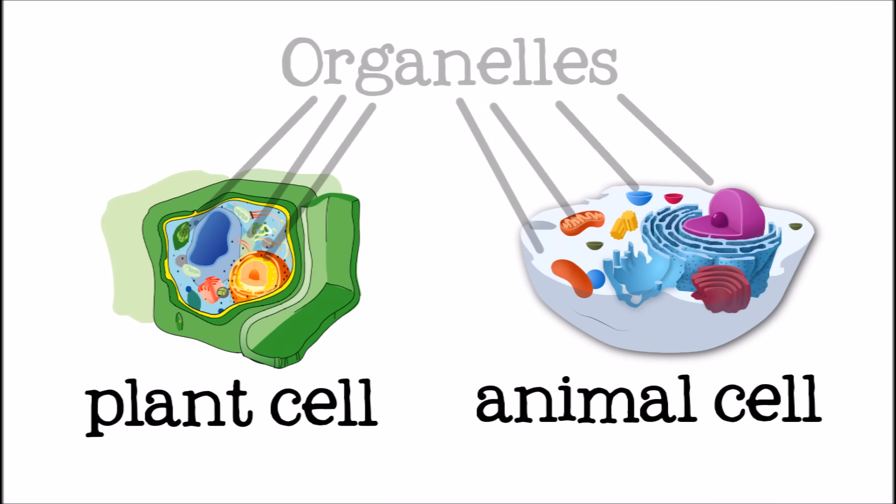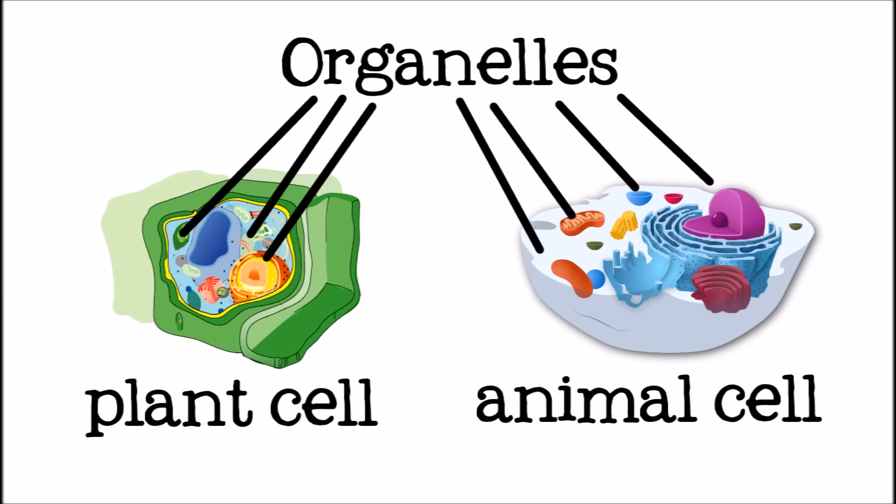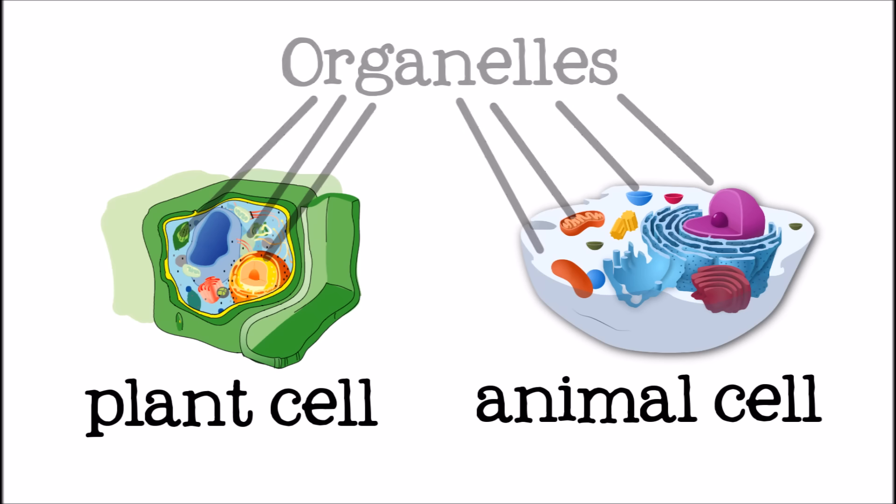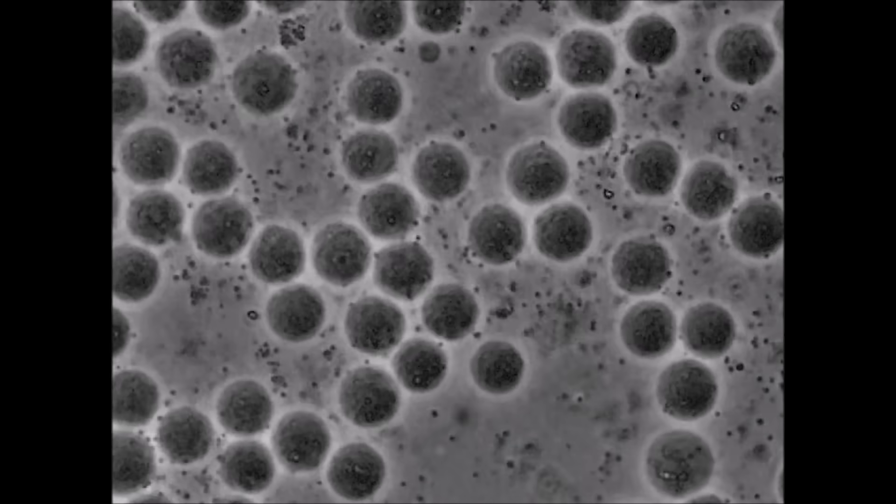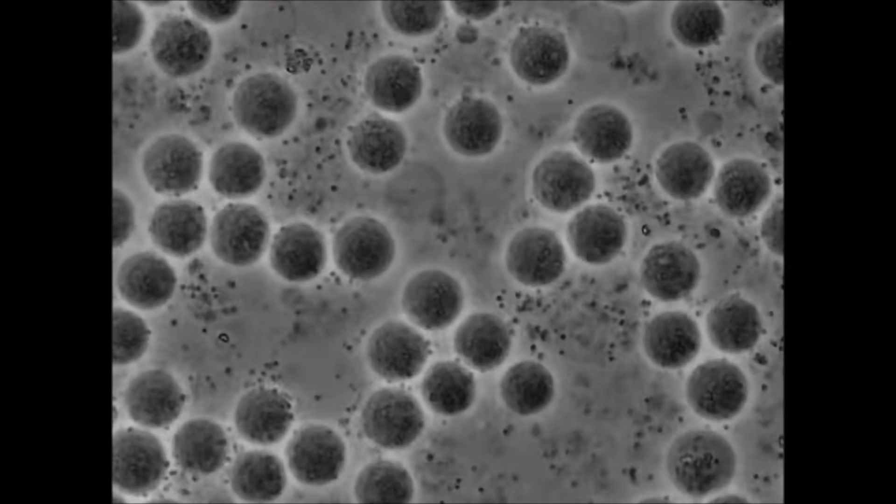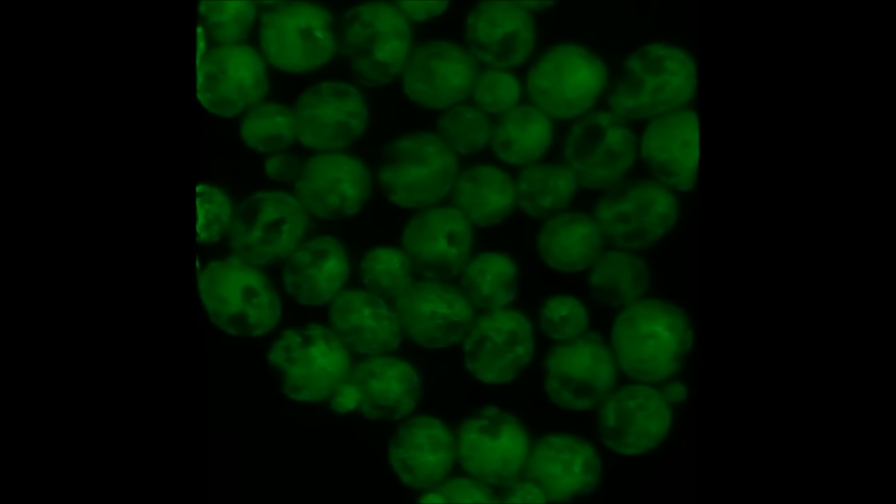Inside the cell membrane, cells have smaller parts called organelles. Organelles are like tiny organs, and they each do specific jobs inside the cell. Some organelles bring in food, get rid of waste, repair the cell, and help it grow and reproduce.